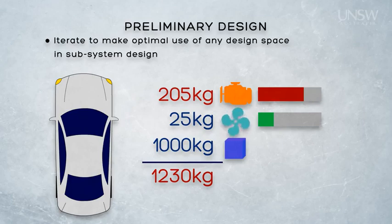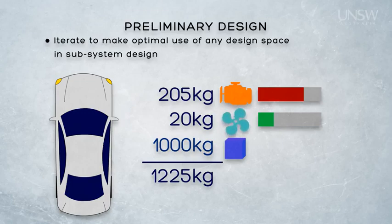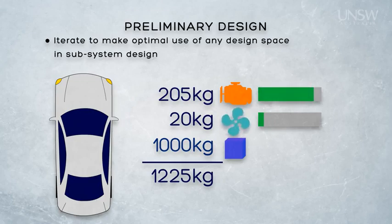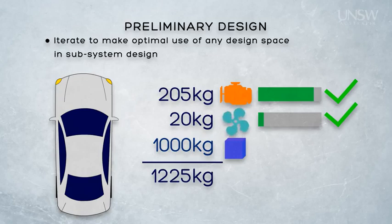Consider, for example, if the air conditioner could be designed to be slightly lighter than the allocated 25 kilos and still meet all of its requirements. If the air conditioner could be designed to be only 20 kilos, the systems engineer could allocate the spare 5 kilos to the engine team and allow them to design an engine that is now 205 kilos. Overall, the car will still weigh 1,225 kilos, but we will end up with an adequate air conditioner and an adequate engine. What if the air conditioner could also be designed to consume a little bit less power from the engine than initially thought? Now the engine does not need to produce as much power as previously. By using some of the design space available from the air conditioner, we have given the engine designers much needed room to move.